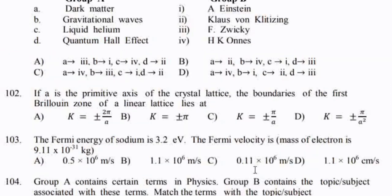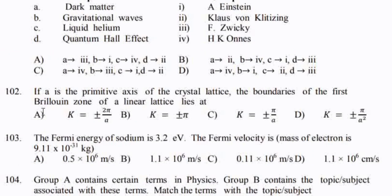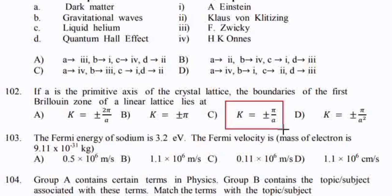If a is the primitive axis of the crystal lattice, then the boundaries of the first Brillouin zone of a linear lattice are at k equal to plus or minus pi/a. The second Brillouin zone is at plus or minus 2pi/a.